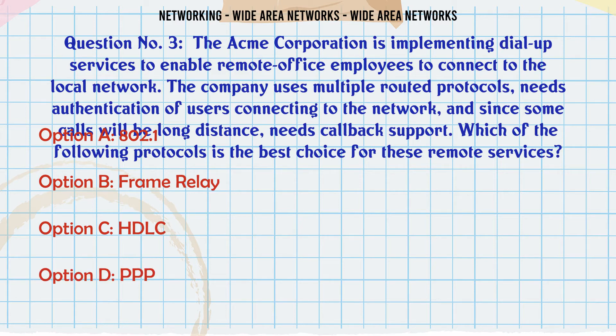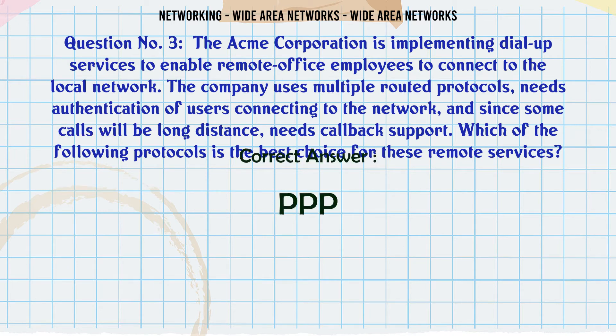The ACME corporation is implementing dial-up services to enable remote office employees to connect to the local network. The company uses multiple routed protocols, needs authentication of users connecting to the network, and since some calls will be long-distance, needs callback support. Which of the following protocols is the best choice? A. 800 and 2.1. B. Frame Relay. C. HDLC. D. PPP. The correct answer is D: PPP.